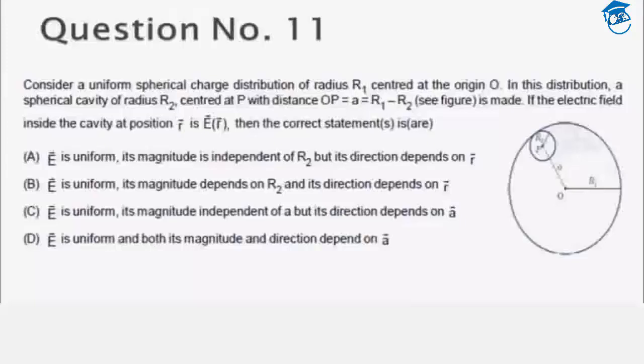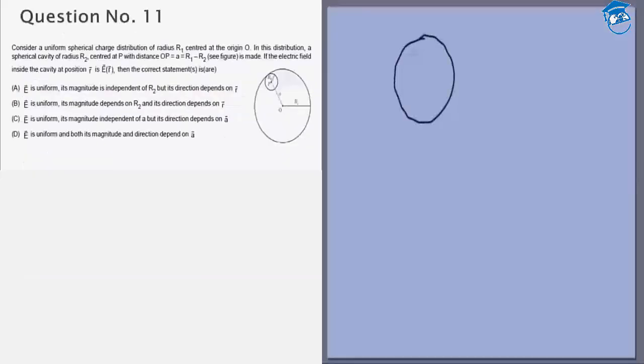We are given a solid spherical charge distribution and inside this there is a cavity. The radius of the charge distribution is r₁, radius of the cavity is r₂, and this distance is O.